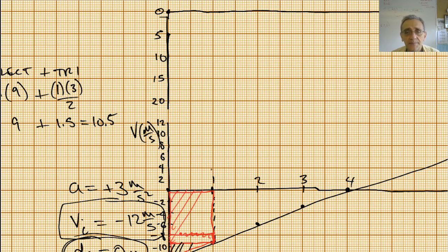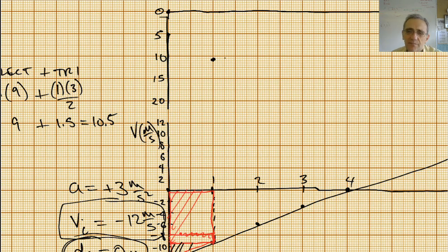I haven't put my horizontal line in yet, so I can do that now. At one second, I'm at negative 10.5. Here's 10, and 12.5 is further down, so 10.5 is going to be somewhere around there — maybe that's more like 11, maybe a little bit higher. So my first point is here.